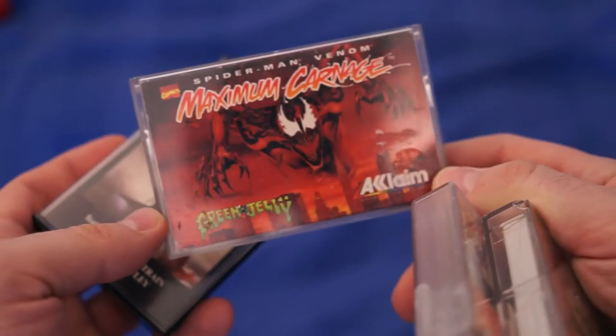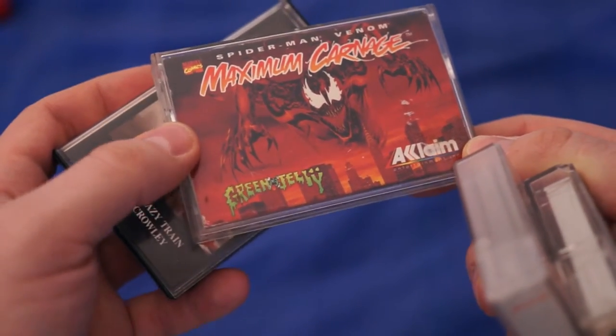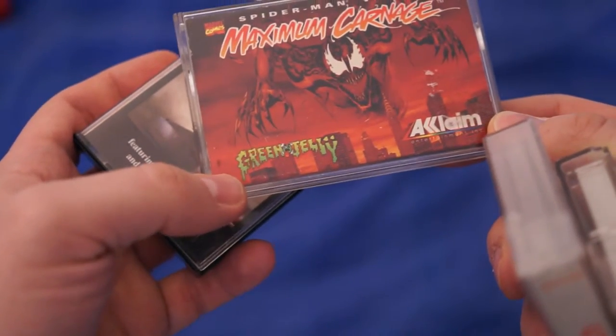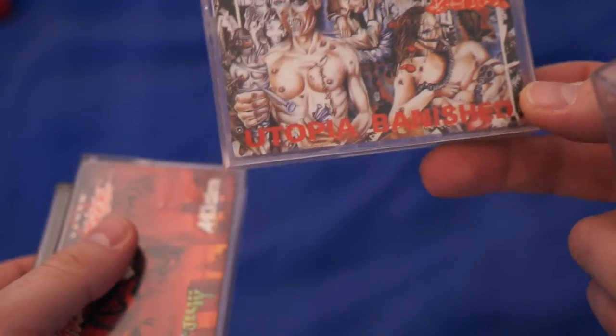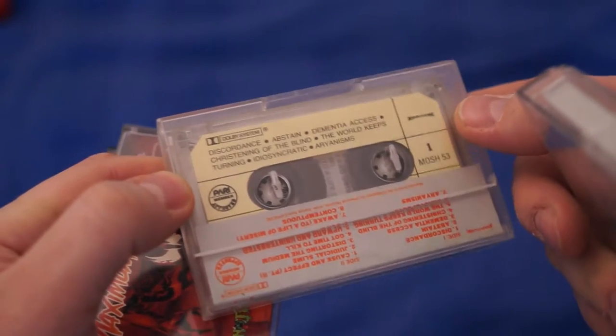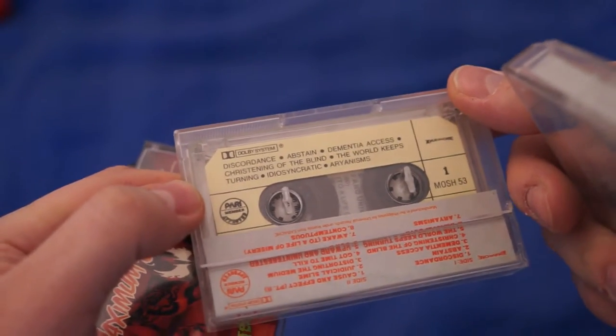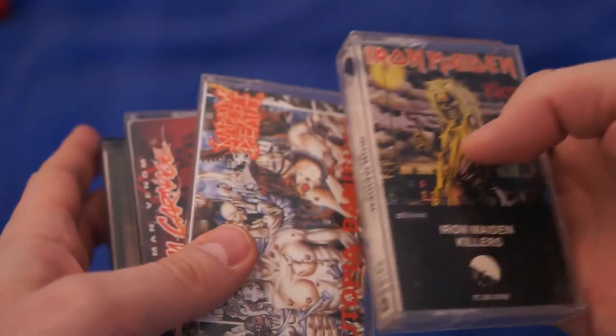This is a tape for a video game called Maximum Carnage and the artist is Green Jelly. It only has two tracks. They go for like 20 bucks on eBay. This is Napalm Death Utopia Banished, some kind of super fast grind metal.